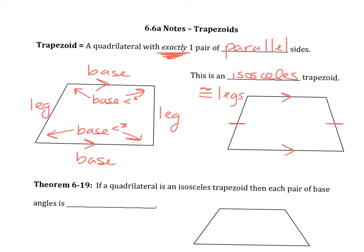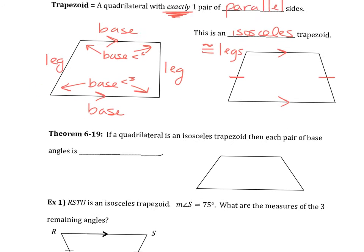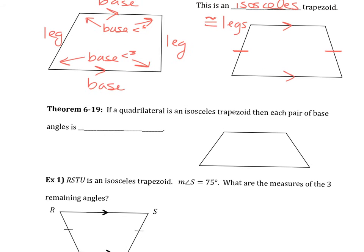So there's a theorem, 6.19, that says if a quadrilateral is an isosceles trapezoid, then each pair of base angles is going to be congruent. And it's not like a parallelogram. In parallelograms, opposites are congruent. This is not going to be the case. You will never have opposite angles that are the same in a trapezoid.